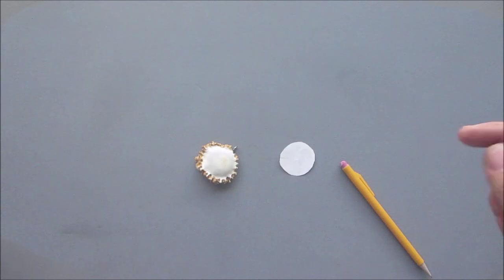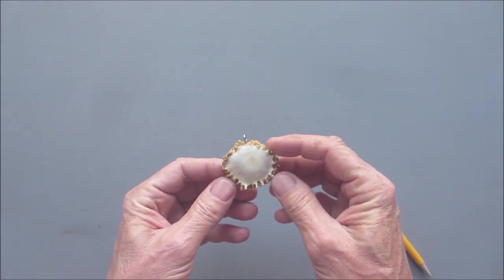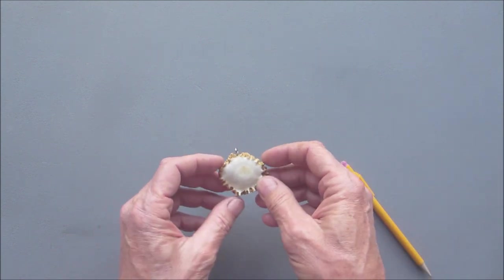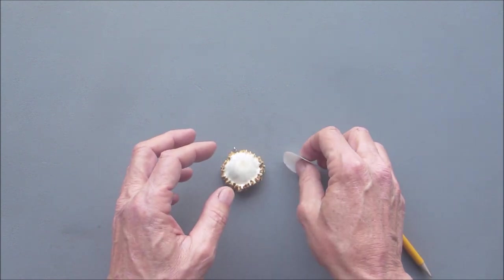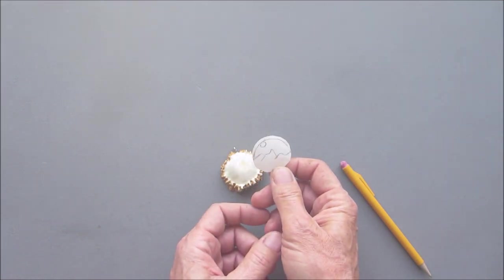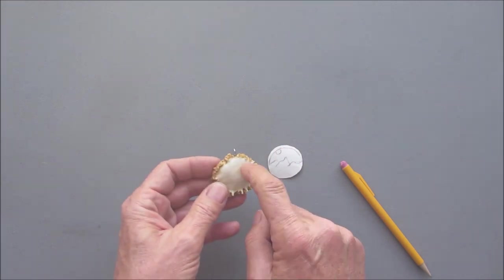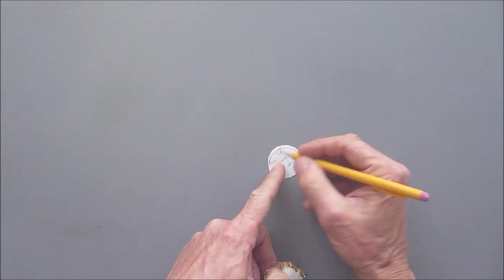When the epoxy dries I'll be back with a pencil and we'll sketch something out. All right, so the epoxy is dried and that's what we got. So now my plan is to make this simple little mountain scene.